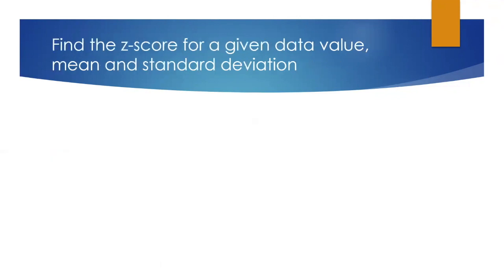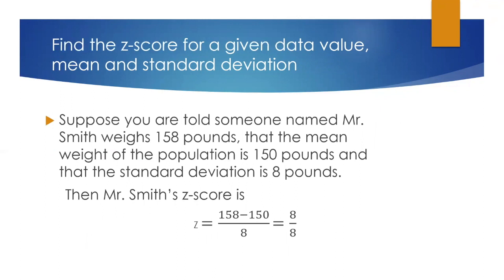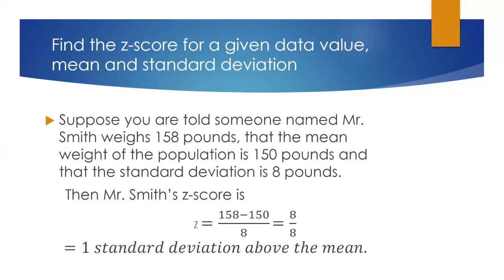To find a z-score for a given data value, mean, and standard deviation, we do this. Suppose you are told someone named Mr. Smith weighs 158 pounds, that the mean weight of the population is 150 pounds, and that the standard deviation is 8 pounds. Then we apply the formula. Mr. Smith's z-score is z equals 158 minus 150 divided by 8, which simplifies to 8 over 8, and of course that means it's equal to one standard deviation above the mean.